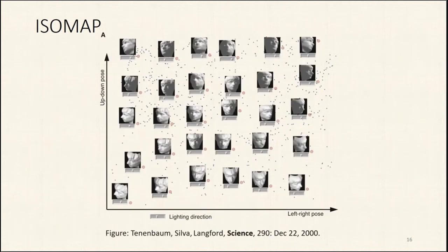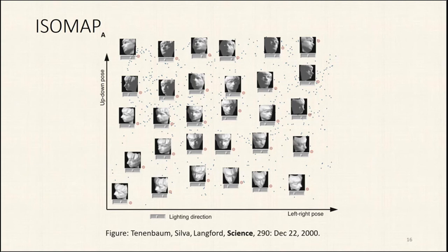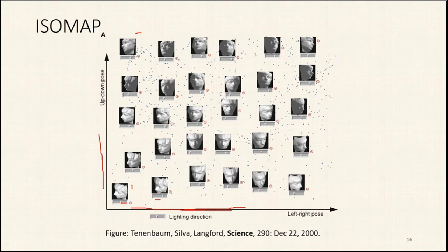Here is Isomap reducing face images to two dimensions. The Euclidean distances between similar faces are computed, then the shortest path algorithm — Floyd or Dijkstra — is applied. The two-dimensional embedding makes intuitive sense: along the X axis you get changes in lighting direction, and along the Y axis you get changes in up-down pose. At one extreme the camera is above the head; at the other it's focused upward from jaw level.